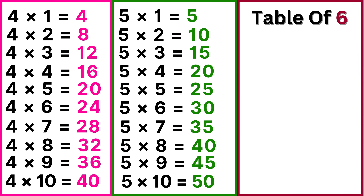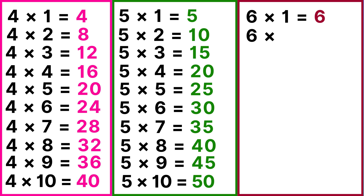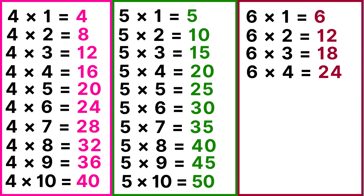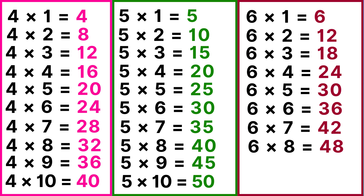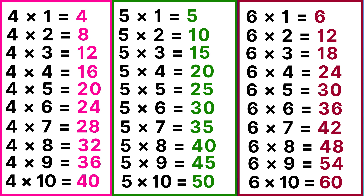Table of 6: 6 ones are 6, 6 twos are 12, 6 threes are 18, 6 fours are 24, 6 fives are 30, 6 sixes are 36, 6 sevens are 42, 6 eights are 48, 6 nines are 54, 6 tens are 60.